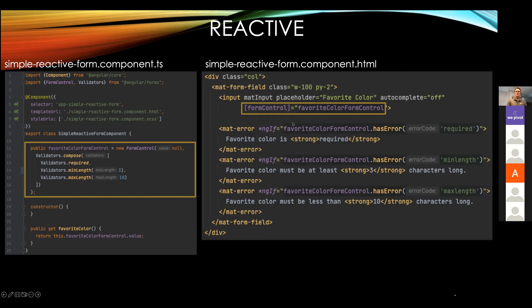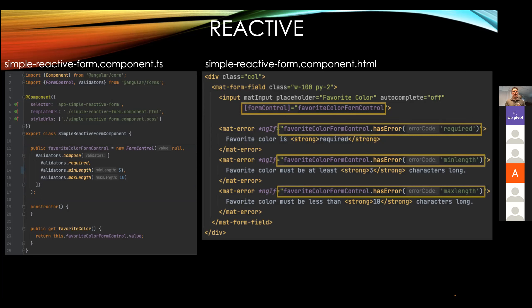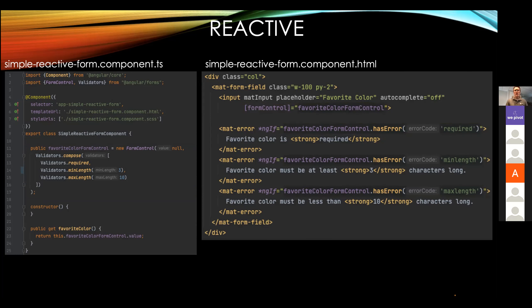I then use the form control directive within my template, and this tells Angular that this input field is going to map to the form control in the component, creating the two-way binding. Because I'm defining the form control manually within the component, Angular is able to reference it directly — I don't need to create a separate annotation. I'm asking the form control: do you have the required error, min length error, or max length error? Then I'm displaying that error as I would in the template. The template does not have any of the validators in there — that code is inside the form control.